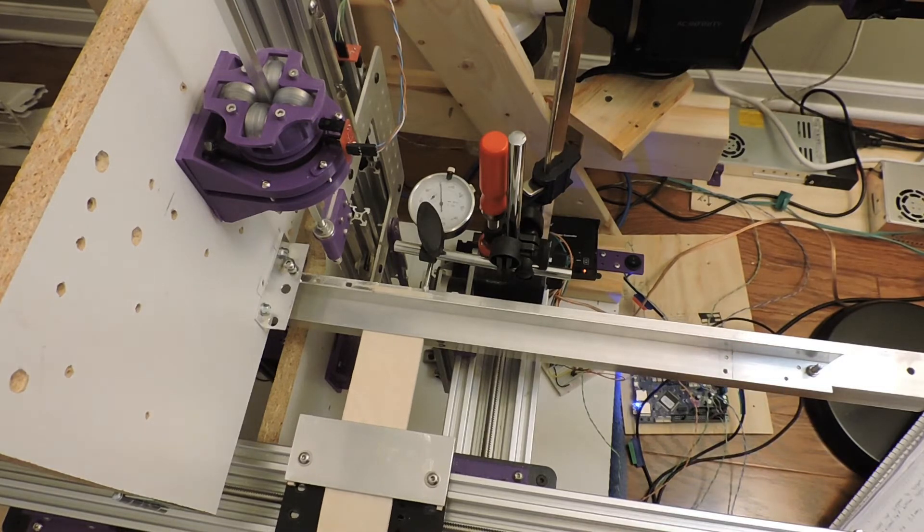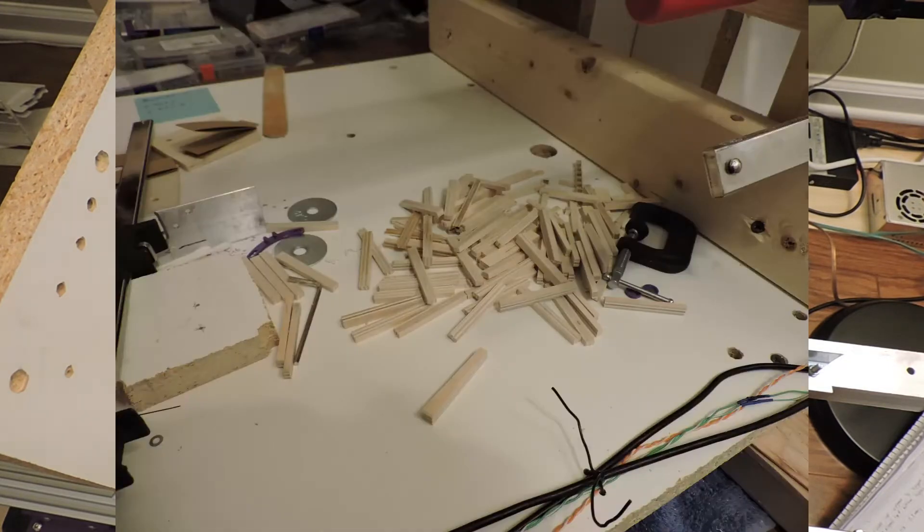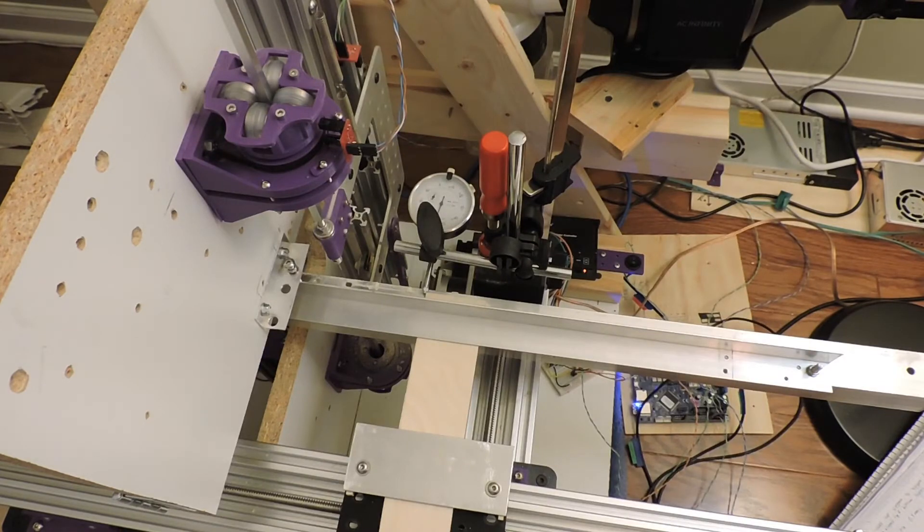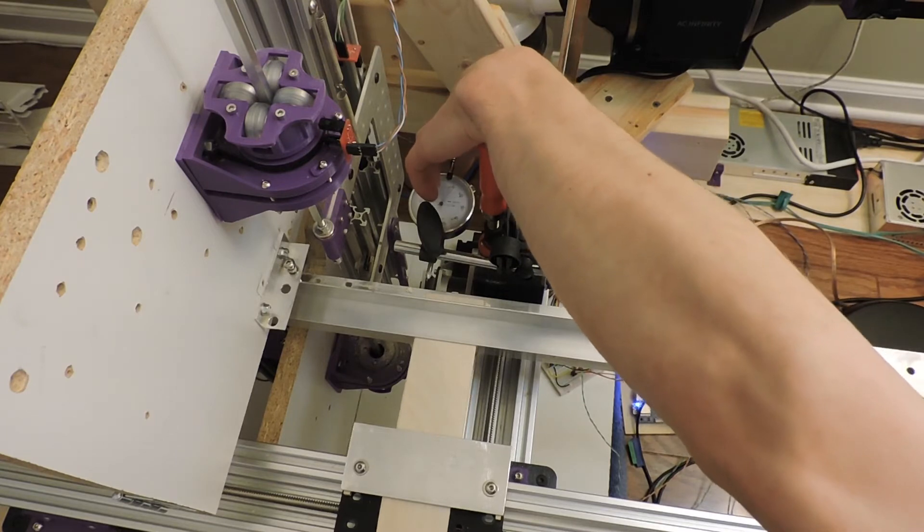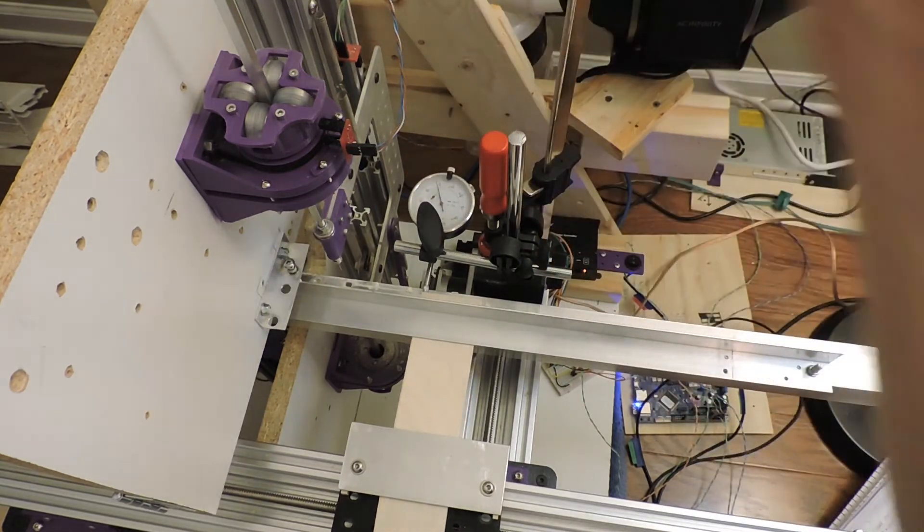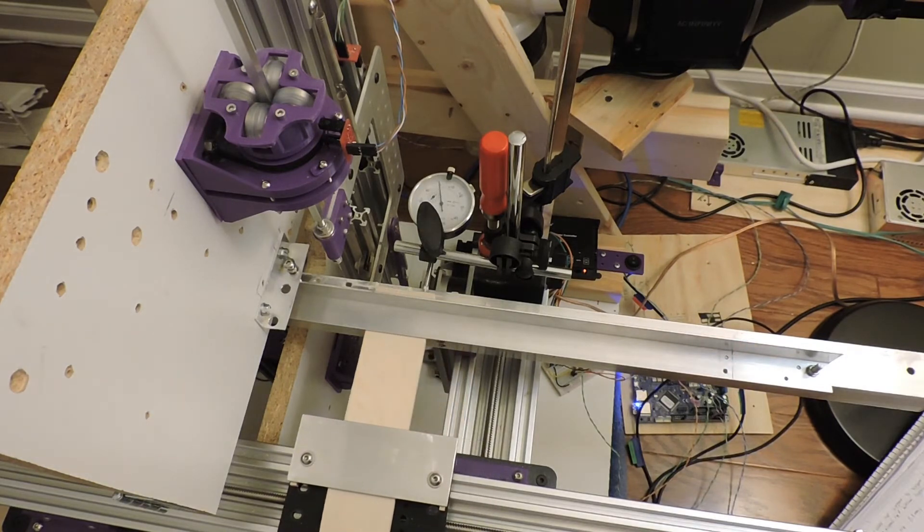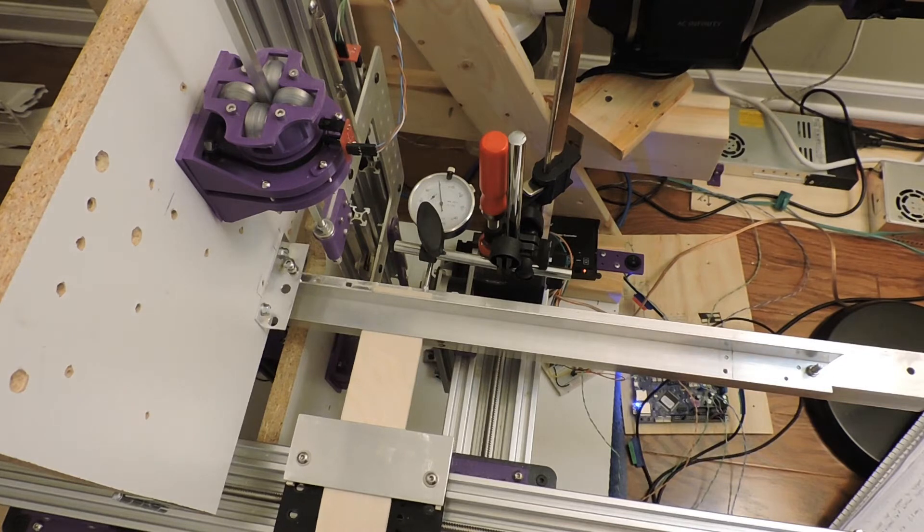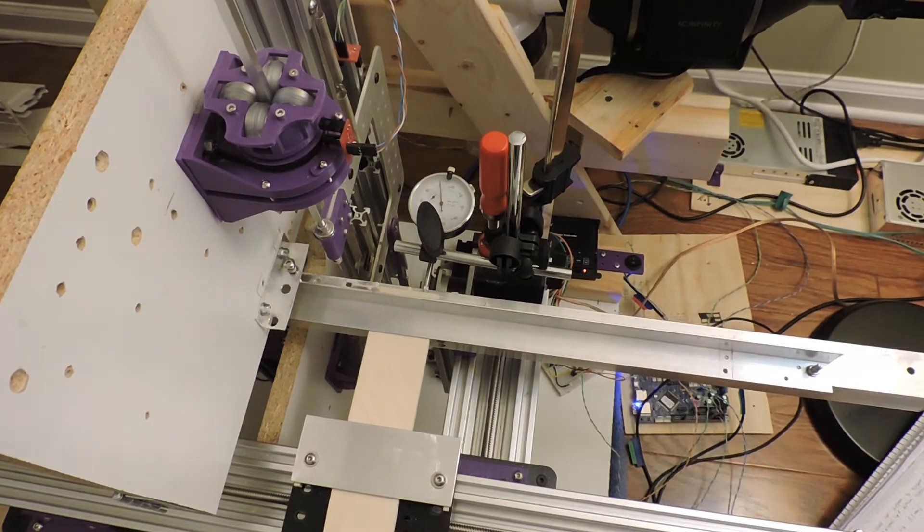And this is actually the last and most successful test after many many tests where the runout, so to speak, is only around 3 or 4 thou across the about 55mm width, which is pretty good. And so the way I would run these tests is make a cut and then measure, and then I can calculate the angle that I need to move the rotary axis by.